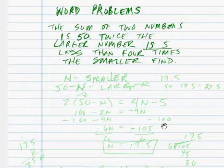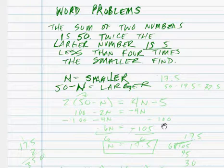So, sum of two numbers. We're going to set n as the smaller number, and we're going to set 50 minus n as the larger number. Sum of two numbers is 50. We have a large and a small. So whatever the smaller is, it's going to be 50 minus n.